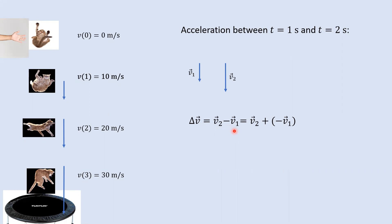V2 really means the velocity at time two, and v1 is the velocity at time one — those are just labels. Time one could be 50 seconds, time two could be five years later. It just so happens that in this example, time one is one second and time two is two seconds. That's not a necessary restriction on the notation.